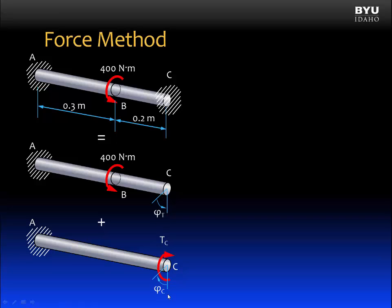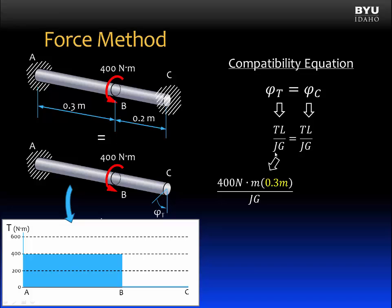We will call it phi sub C. Now we can write a compatibility equation, which is the angle of twist phi sub T is equal to the angle of twist phi sub C. Now we can expand these equations using TL over JG. For the first term, which corresponds to this diagram here,